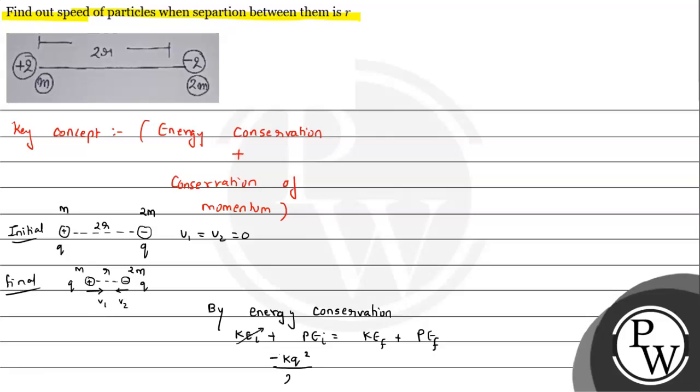That will equal the final kinetic energy: half m v1 squared plus half into 2m into v2 squared, plus potential energy, which is again negative k q squared upon r, where r is the separation now.